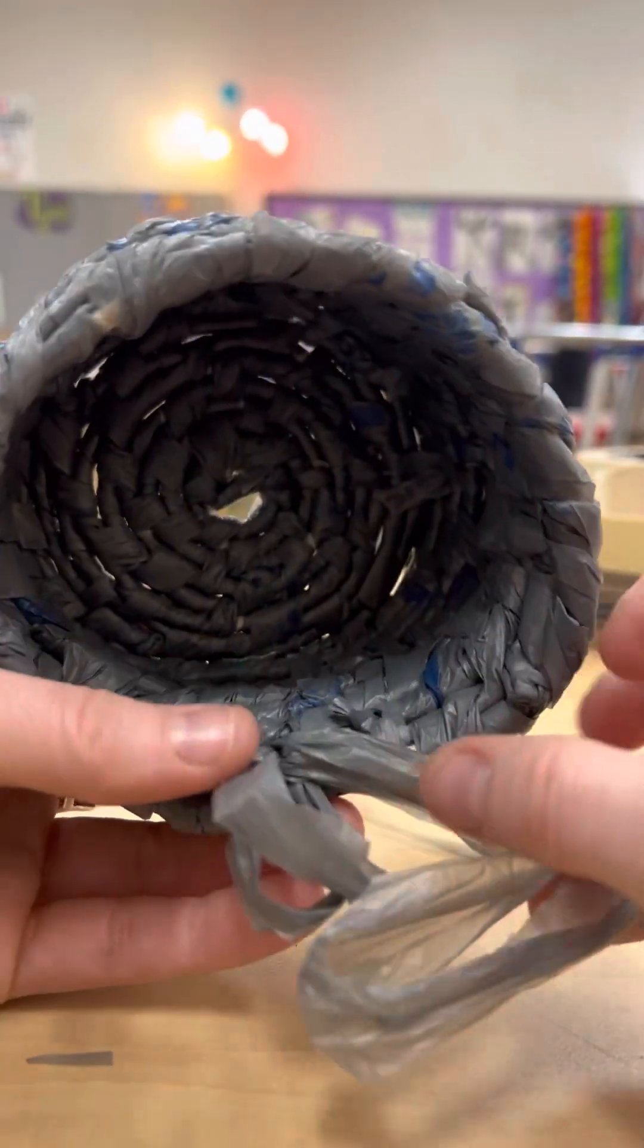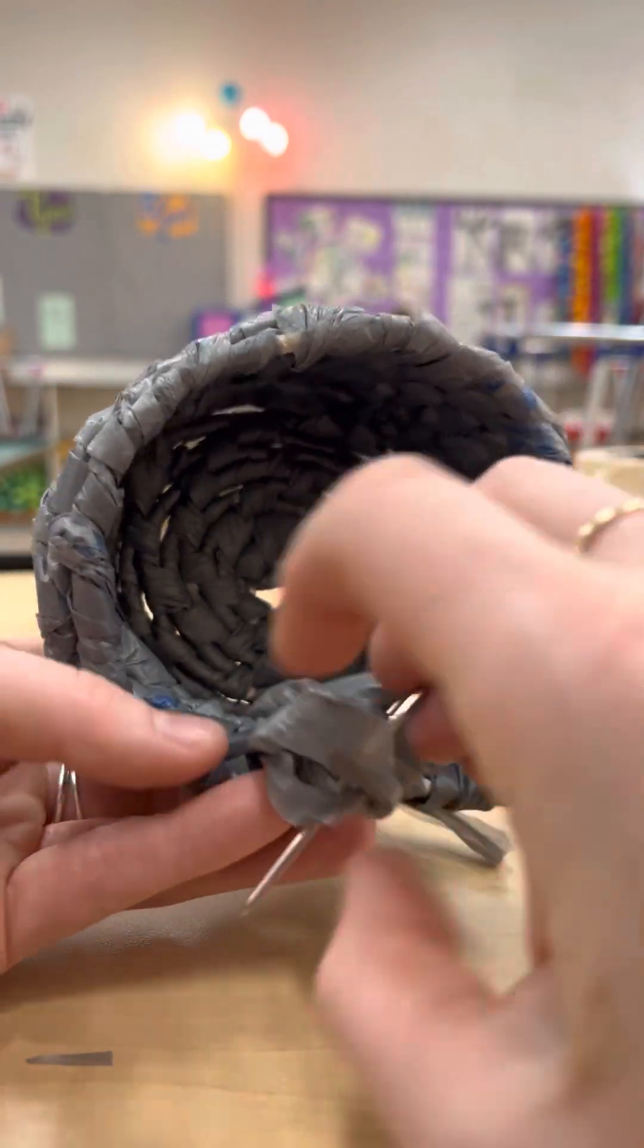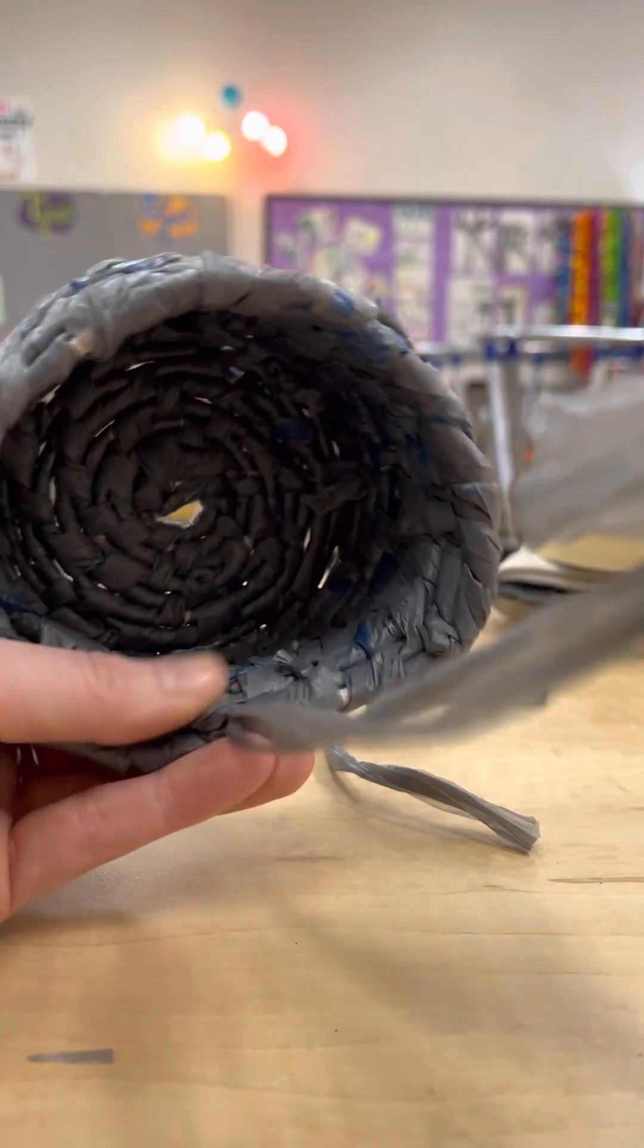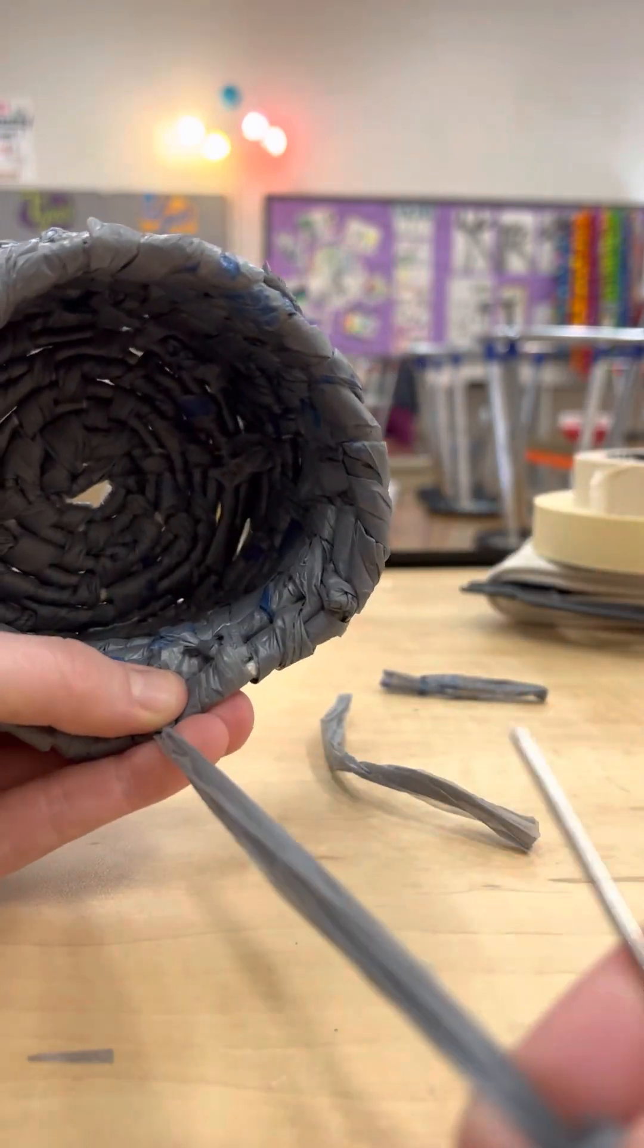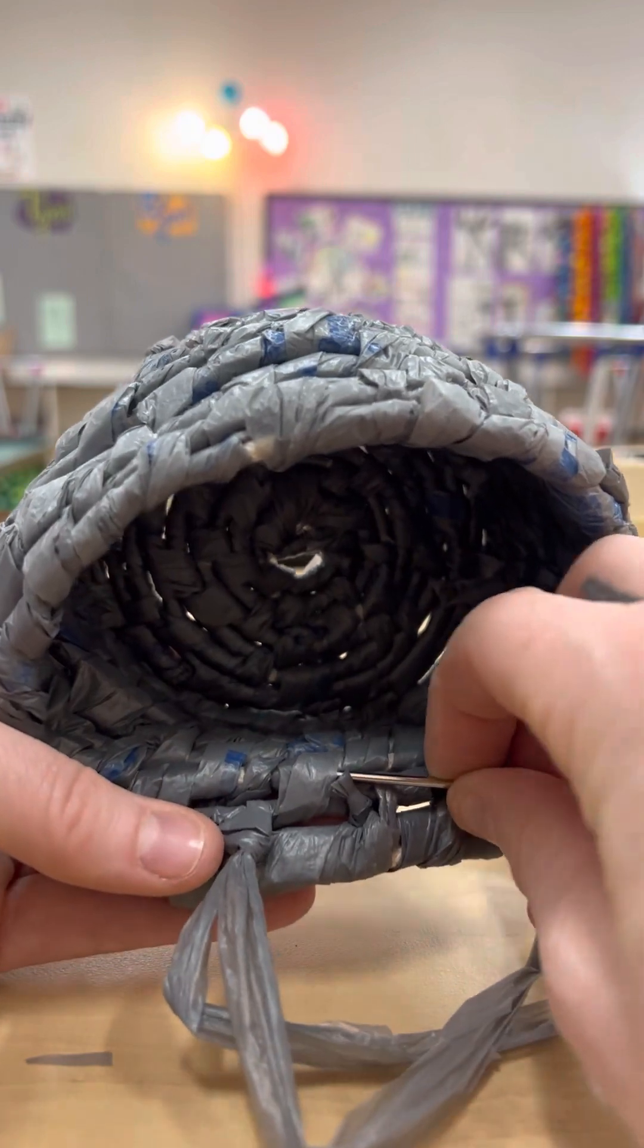And then you can see I went underneath here, and then here's my loop. I'm going to go through to tie the knot. I'm going to do that twice just to make sure that it's secure. So here we go, one more time, and my second knot.